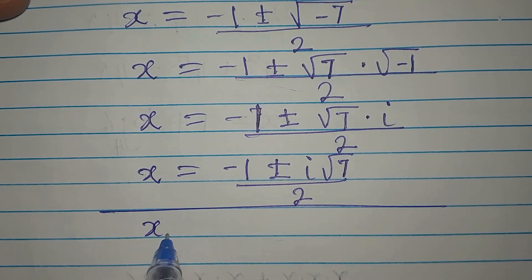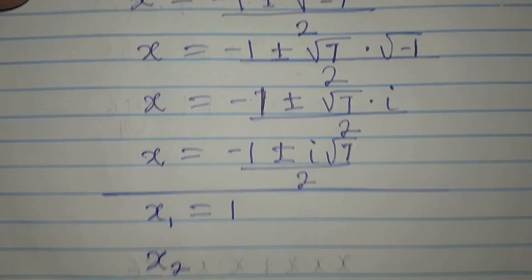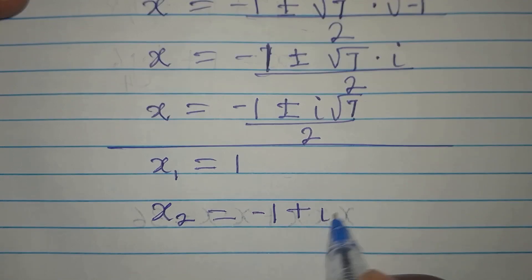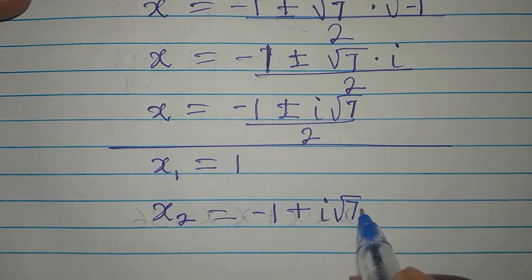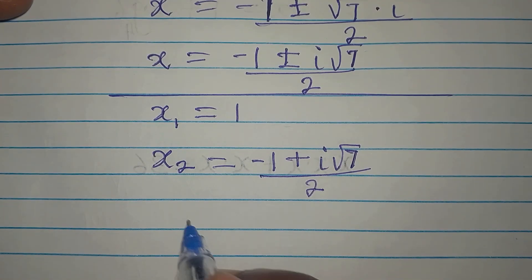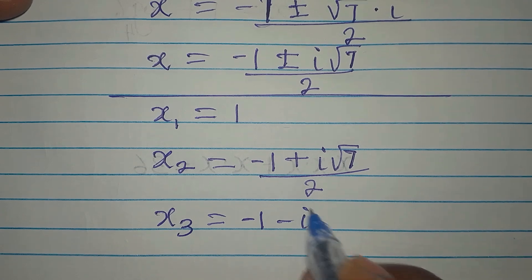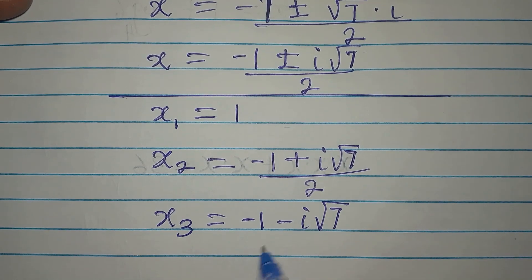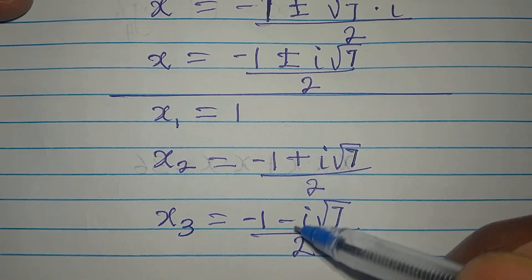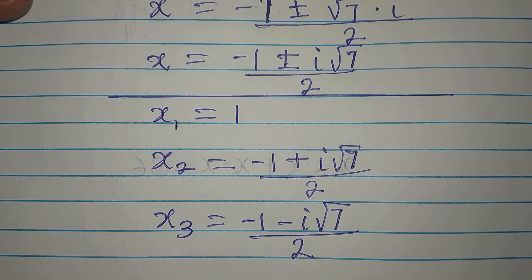Let's collect all three solutions together. The first solution is x₁ equals 1. The second solution is x₂ equals negative 1 plus i root 7, divided by 2. The third solution is x₃ equals negative 1 minus i root 7, divided by 2. The difference between x₂ and x₃ is that one has a positive and the other a negative. Thank you for watching, and if you have not subscribed, it is not too late.